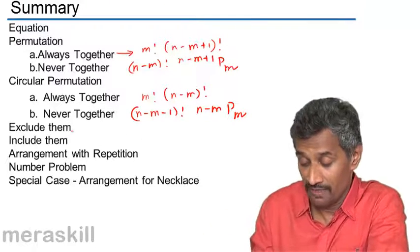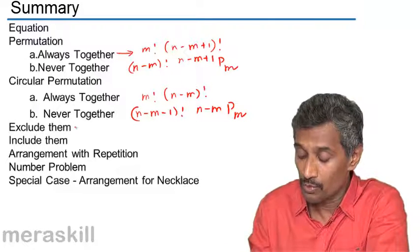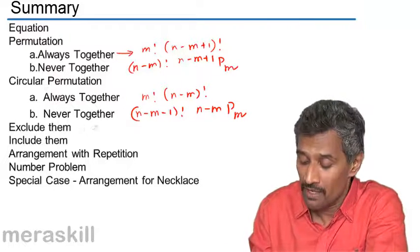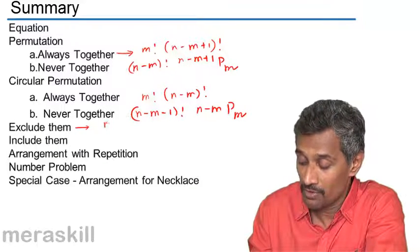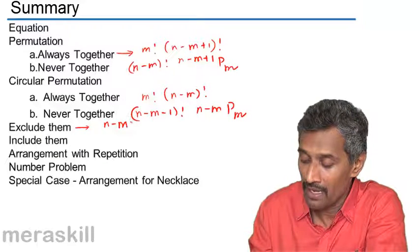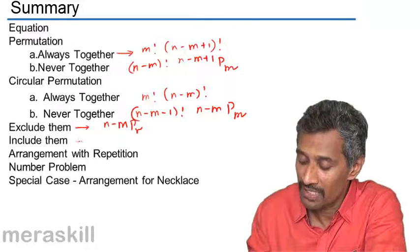Right, then we will be able to exclude them, suppose one particular item is excluded, then the number of available is going to be n minus m, and r have to be chosen out of this, hence we have that.